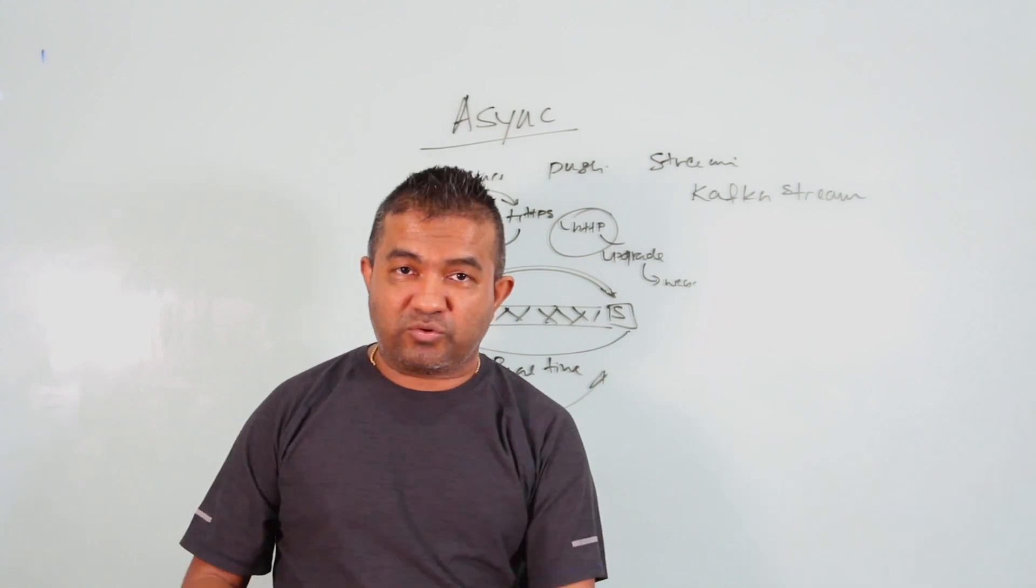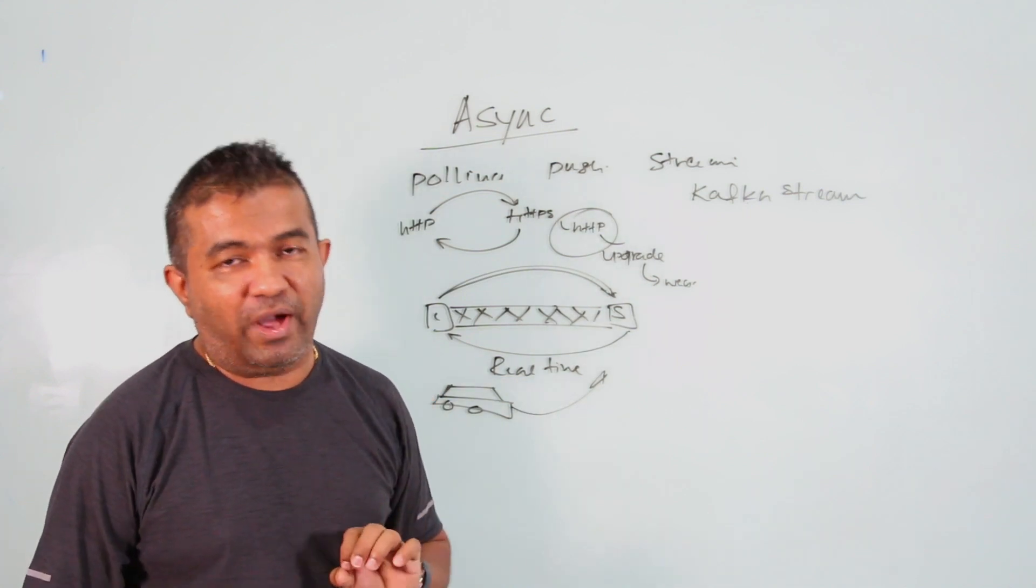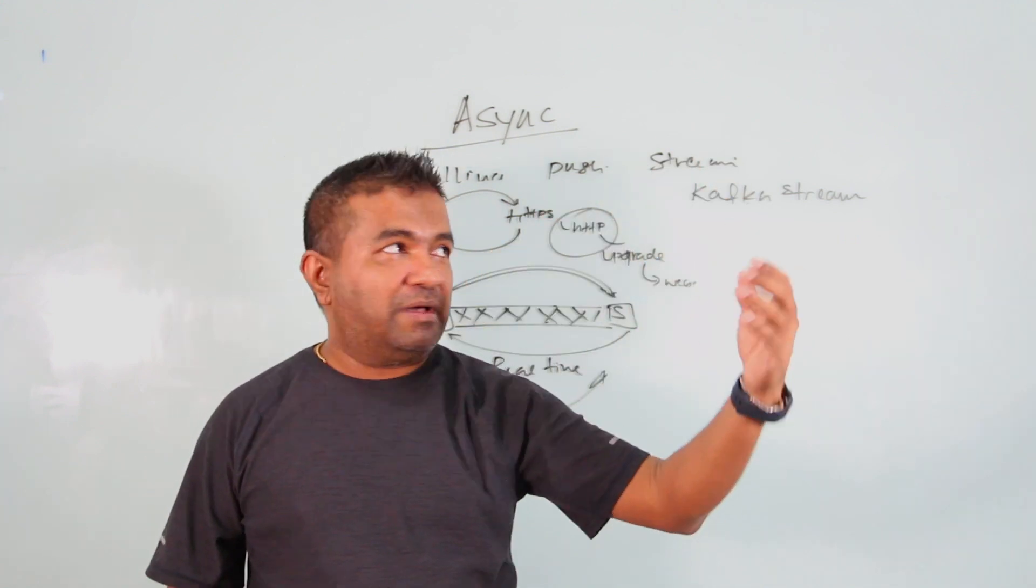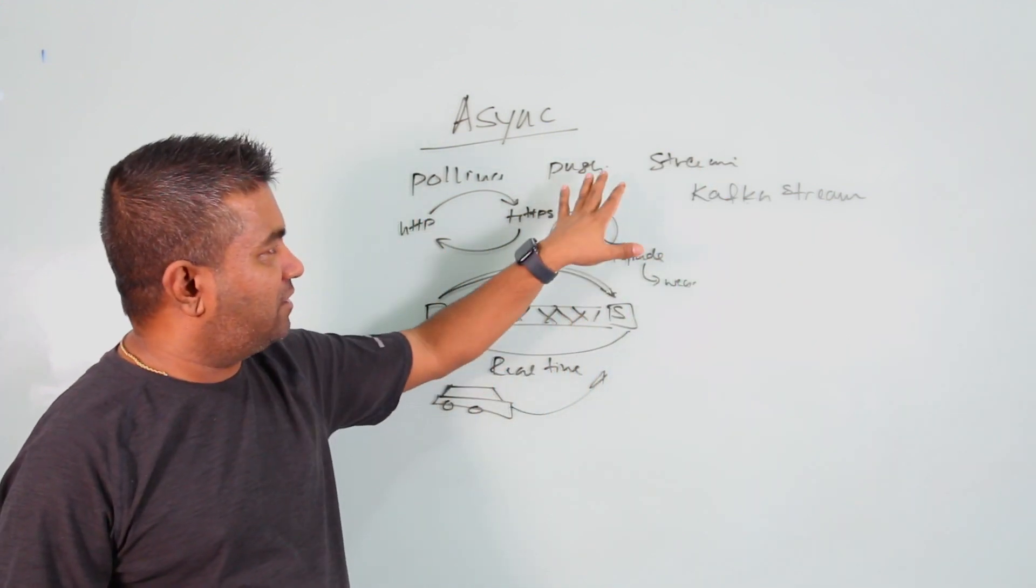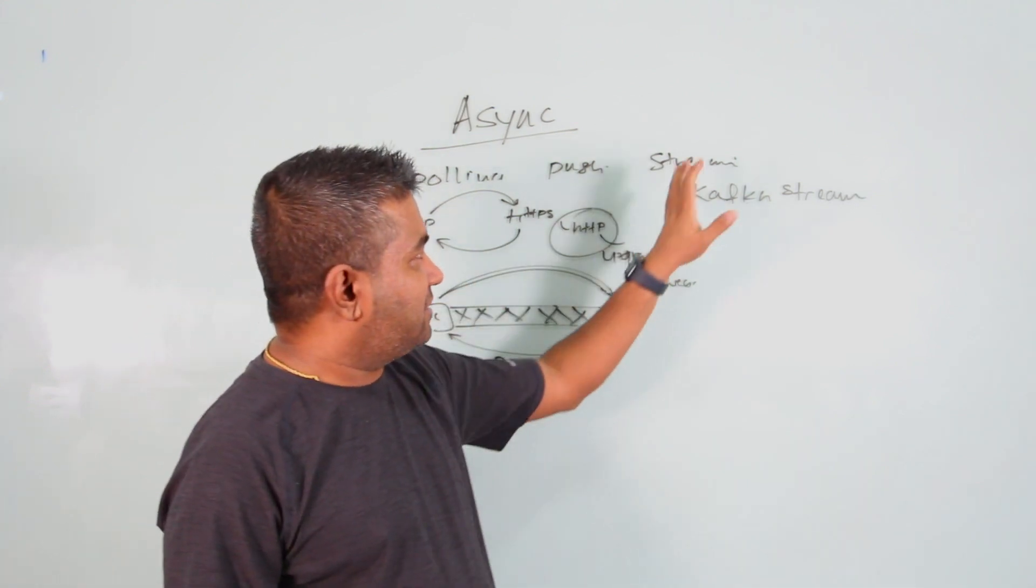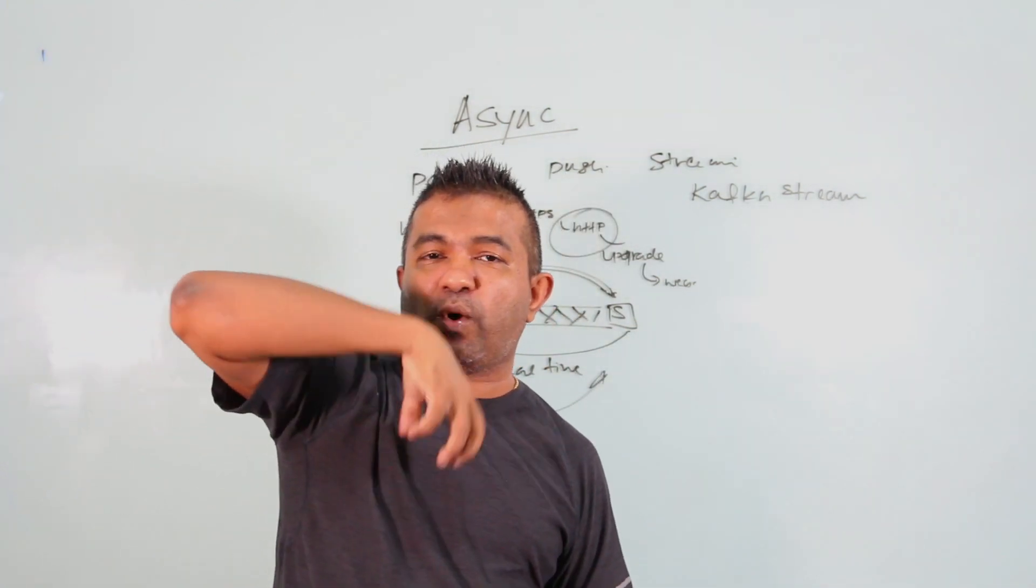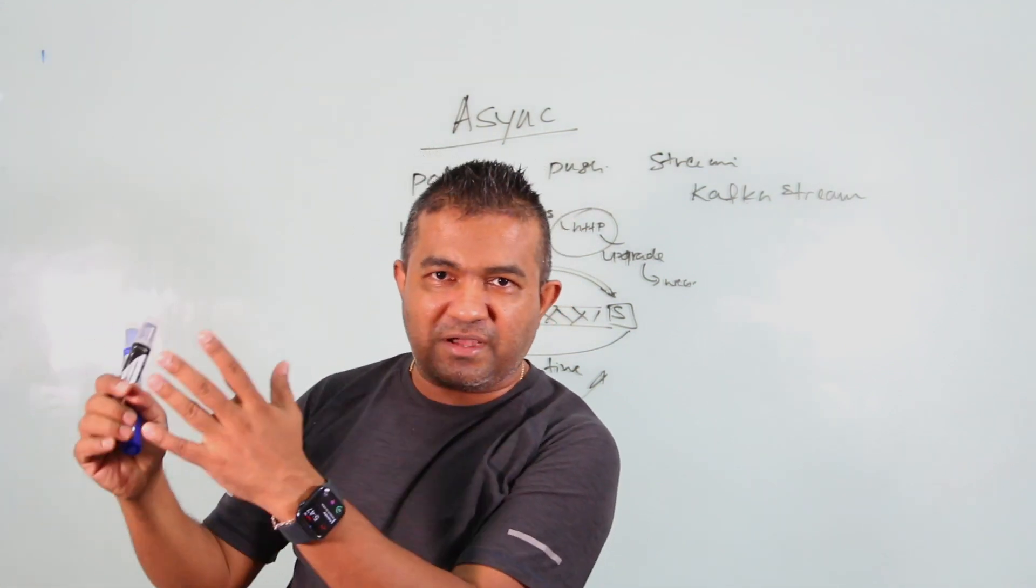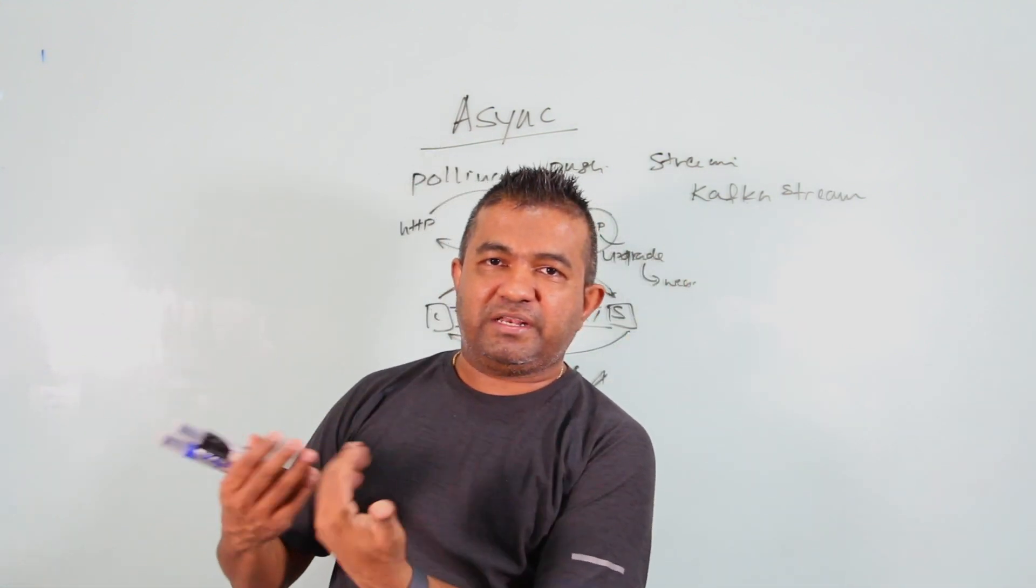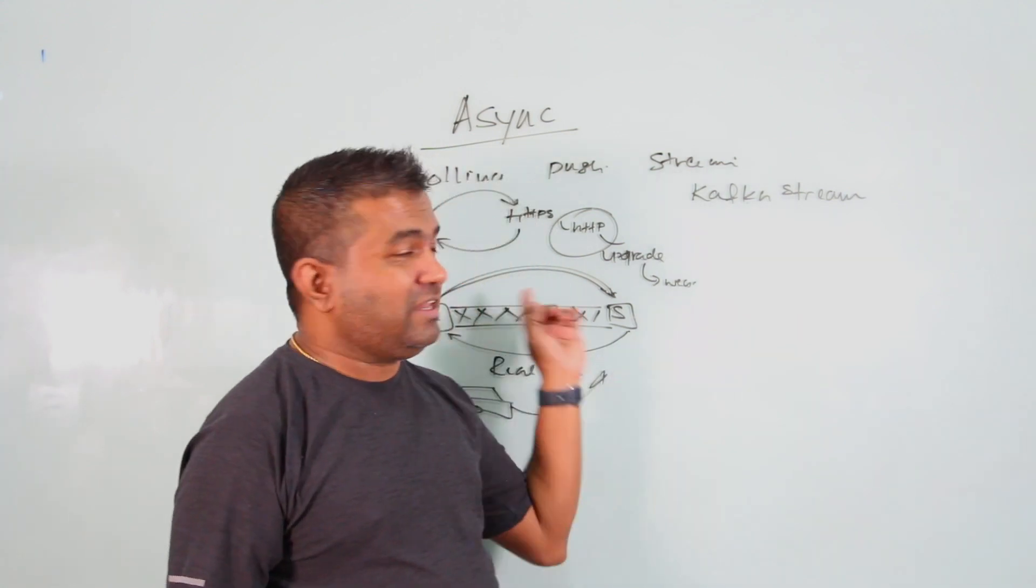If you're asked to design a system where you need updates from another system, you can ask: is it okay to have intervals? If so, you can go with polling because it's simple HTTP. If you need either side to initiate the message, go with the push approach using WebSocket where either party can send messages. Otherwise, if you don't need to send messages but need to keep getting updates - one way communication - then use streaming. They keep streaming the data and you receive it to draw or do whatever you want.